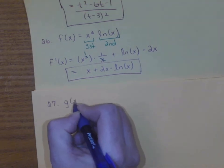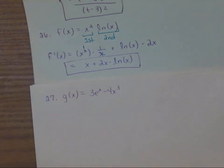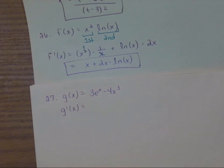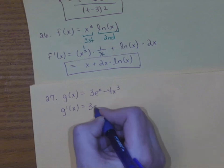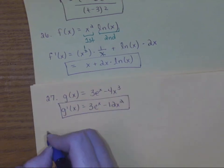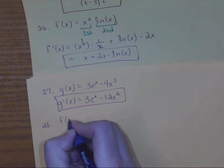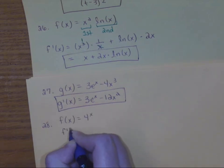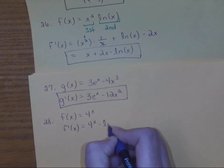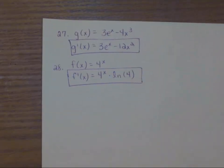Number 27: g of x equals 3e to the x minus 4x cubed. This is different — we're subtracting two functions separated by a minus sign, so we don't need any fancy rule. Just take each derivative: for 3e to the x, the derivative of e is always itself, and then just do the power rule for the second term. Number 28 uses the general exponential rule: the derivative is itself times the natural log of whatever the base number is. If you know the rule, it's pretty straightforward.